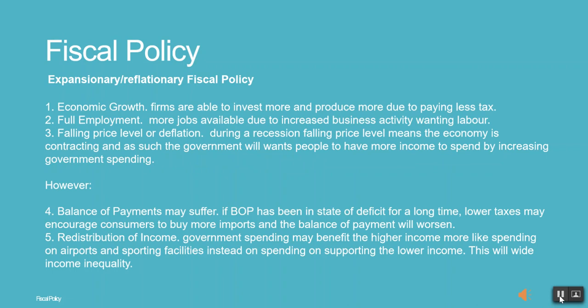Purposes of expansionary fiscal policy: First, Economic Growth — firms are able to invest more and produce more due to paying less tax. Second, Full Employment — more jobs become available due to increased business activity wanting labor. Third, Falling Price Level or Deflation — during a recession, a falling price level means the economy is contracting, and so the government will want people to have more income to spend by increasing government spending.